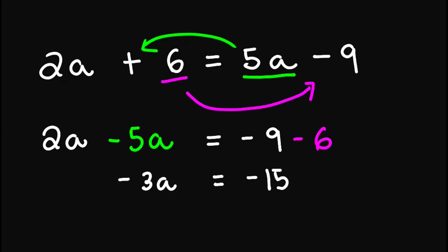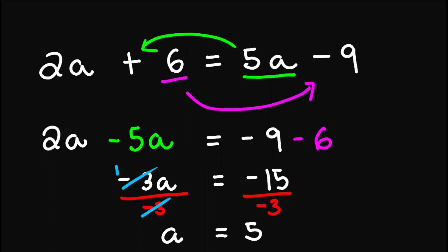Now from here, to obtain only a, what we do is divide negative 3 on both sides. So this negative 3 would cancel out into 1, and 1 times a is simply a. So this becomes a equals negative 15 over negative 3, which is 5. And this is the answer.